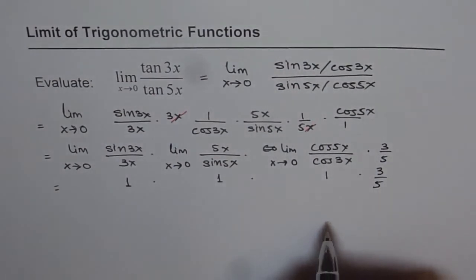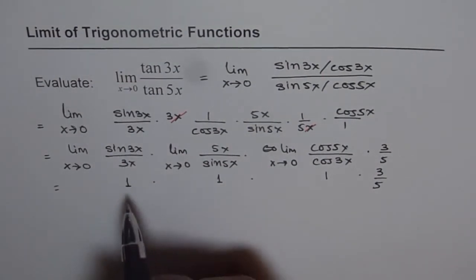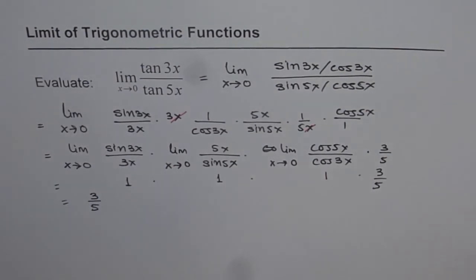So you get the answer. The answer for this question is 3 over 5. So limit of tan 3x divided by tan 5x is 3 over 5. Thank you.